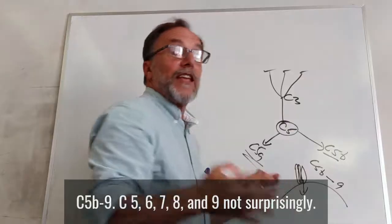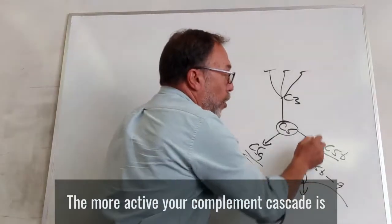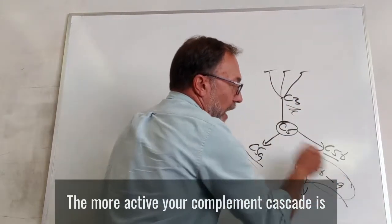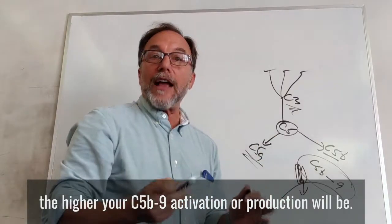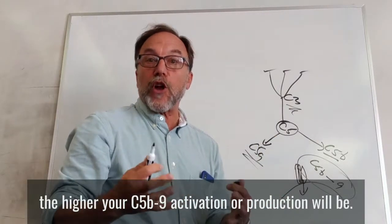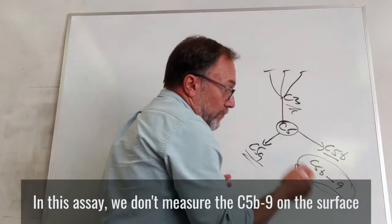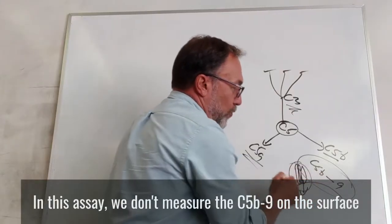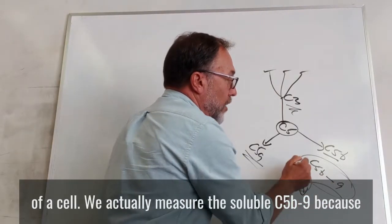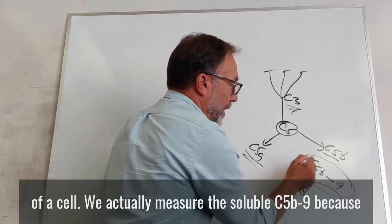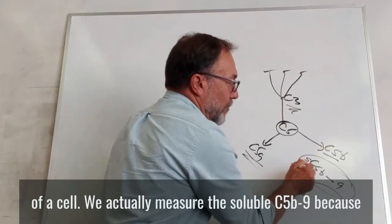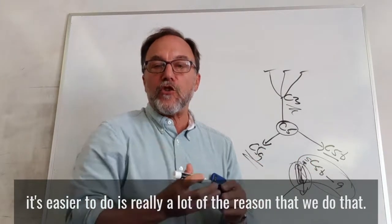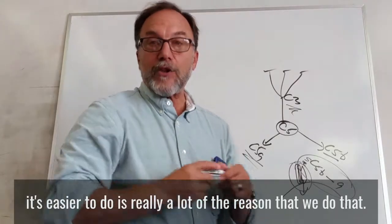It's C5, 6, 7, 8, and 9 — not surprisingly. The more active your complement cascade is, the higher your C5B-9 activation or production will be. For this assay, we don't measure the C5B through 9 on the surface of a cell. We actually measure the soluble C5B through 9, because it's easier to do — that's really a lot of the reason that we do that.